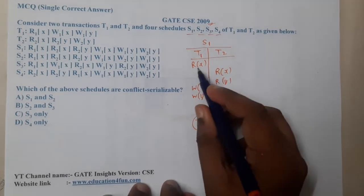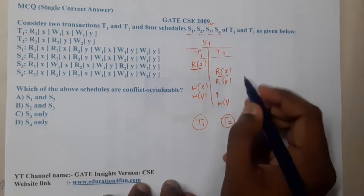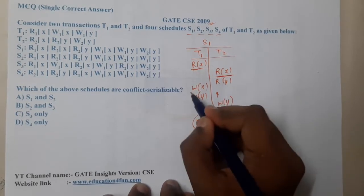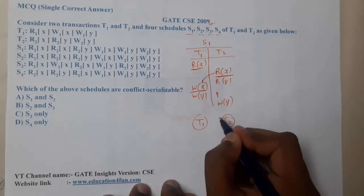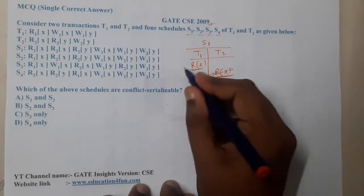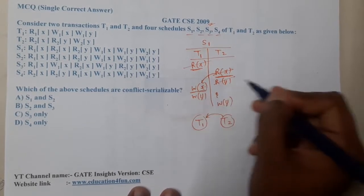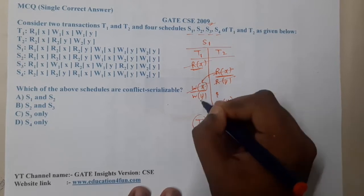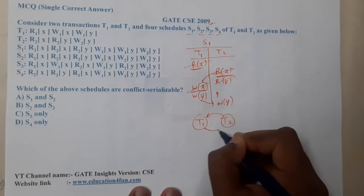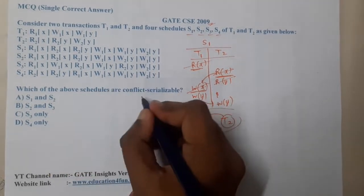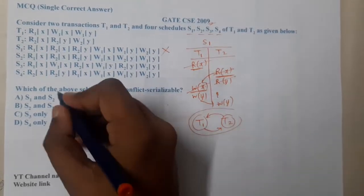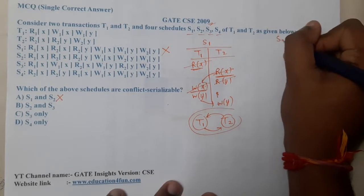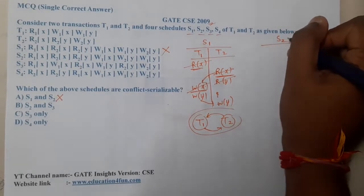Drawing the precedence graph for S1: Read-Read has no conflict. But where T2 reads and T1 writes, there is a conflict from T2 to T1. Then Write(Y) on T1 and Write(Y) on T2 creates a conflict from T1 to T2. This forms a cycle, so S1 is not conflict serializable.